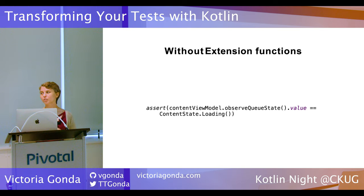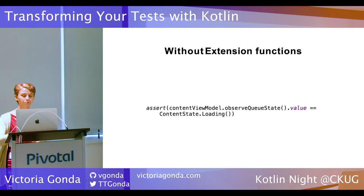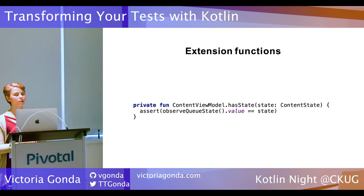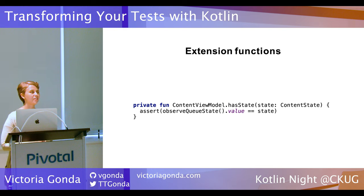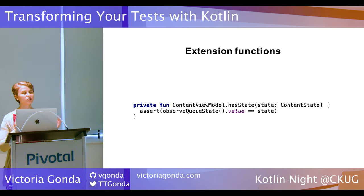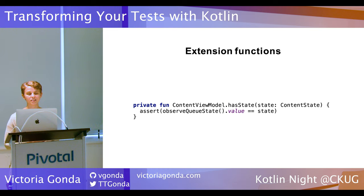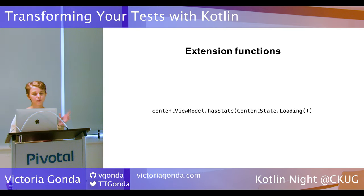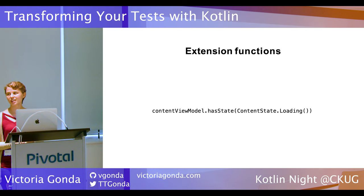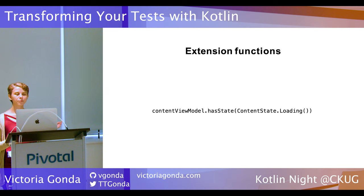Here's an example without using an extension function. We have a ContentViewModel with some state — a QState — and we're checking that the value is loading. That's a lot of words just to say, does this view model have the state loading? Using an extension function, we declare it on ContentViewModel, name it 'hasState', and pass in the expected state. Inside the function we put all that logic. To use it, you just call viewModel.hasState and pass in the state you expect. It does the exact same thing but is much more expressive and easier to read.